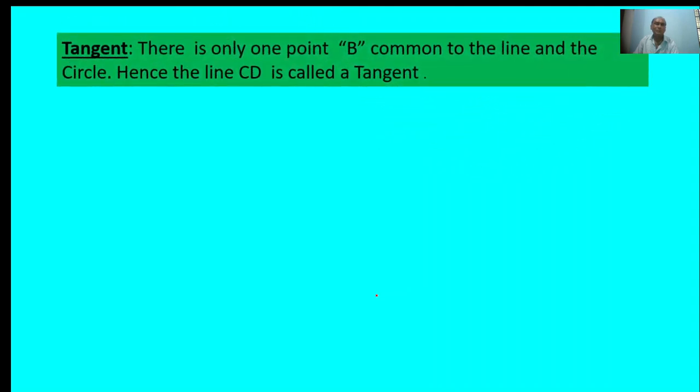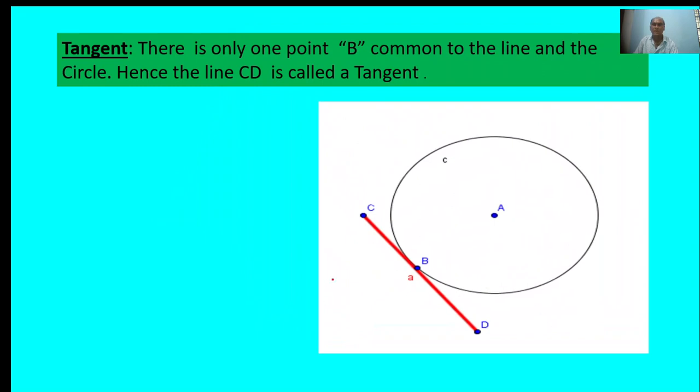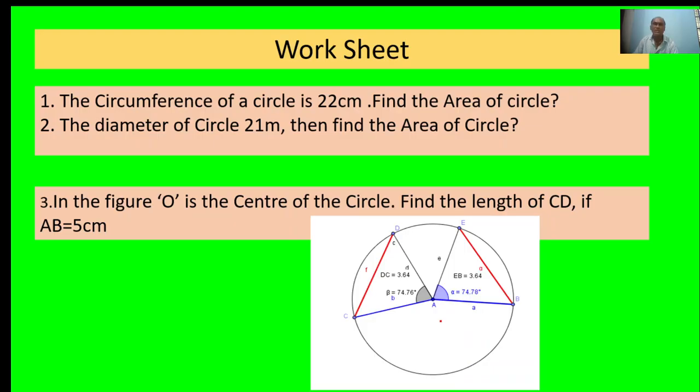Tangent: there is only one point B common to the line and the circle. Hence, the line CD is called a tangent. Same process: A is the center of the circle, B is the point of touch. Line CD touches the circle at point B. CD is a tangent.